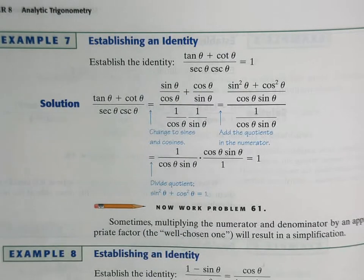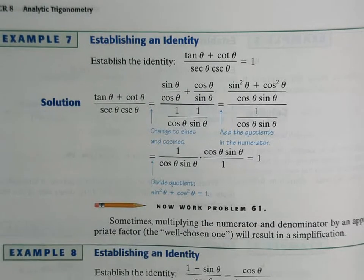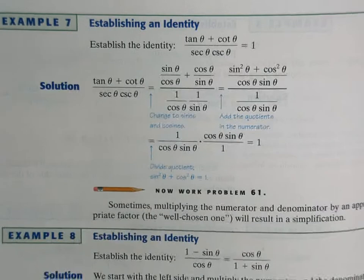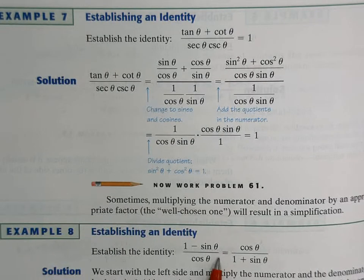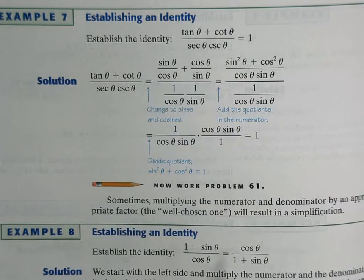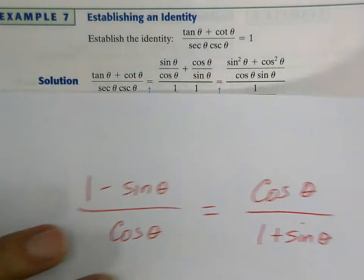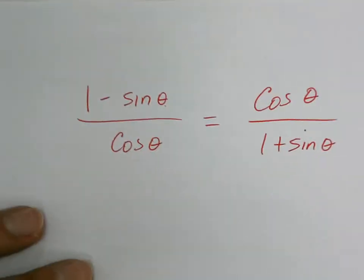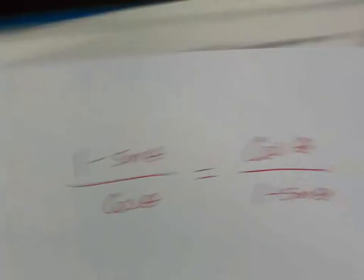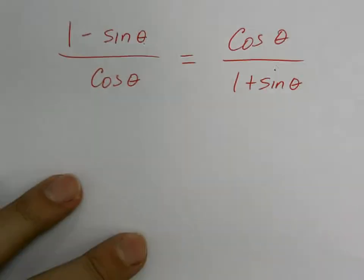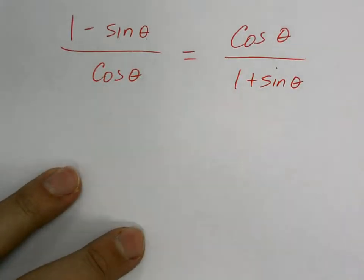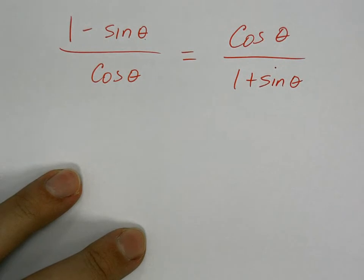The next technique applies to some of the problems I didn't get a chance to talk about in class. I'm going to use a piece of paper to help you out — I think it'll make more sense if you see me doing it. Here's the identity: one minus sine of theta over cosine equals cosine over one plus sine.